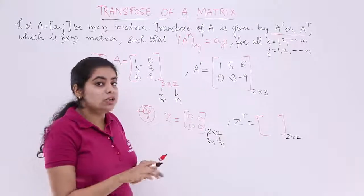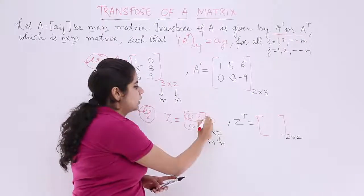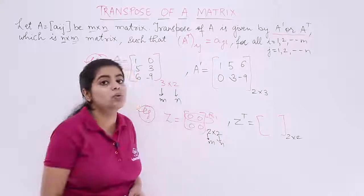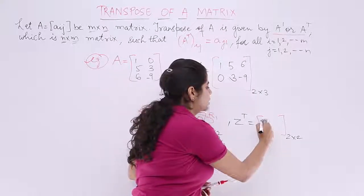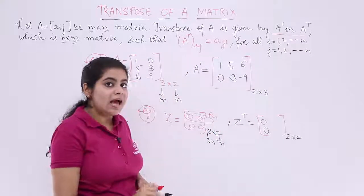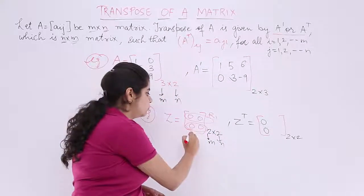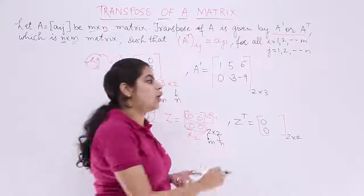Now, 0, 0 in the first row - this is your R1, this is row 1. And this goes to column 1 this time. And this is your row 2, and this goes to column 2 this time.